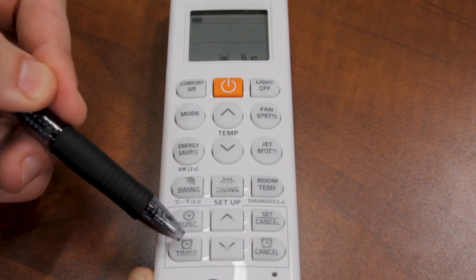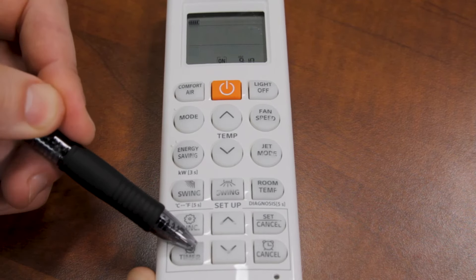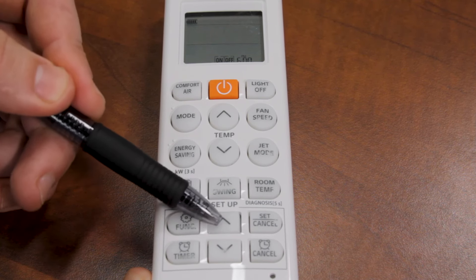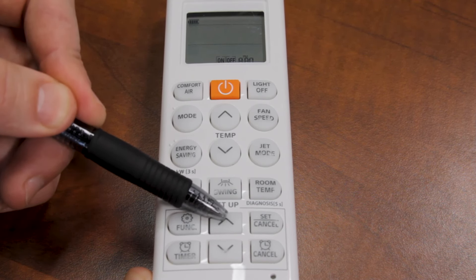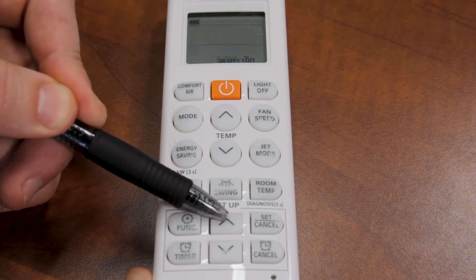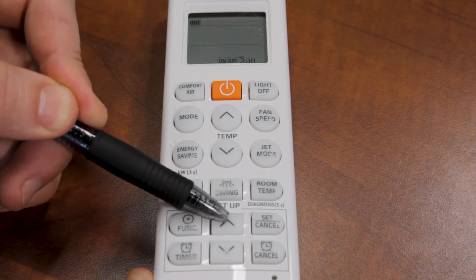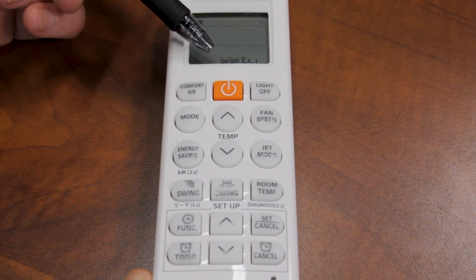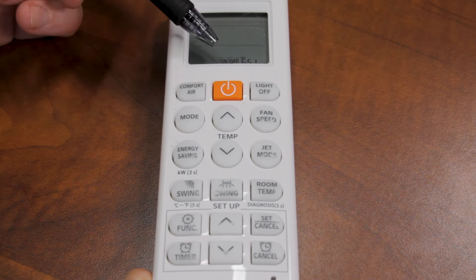Press timer again. We're going to press it until we see the off flashing. Now we're going to change it to what time we want the unit to shut off. Once you're at your time, you press set. You will see that they are both still displayed, and that means the timer is active.